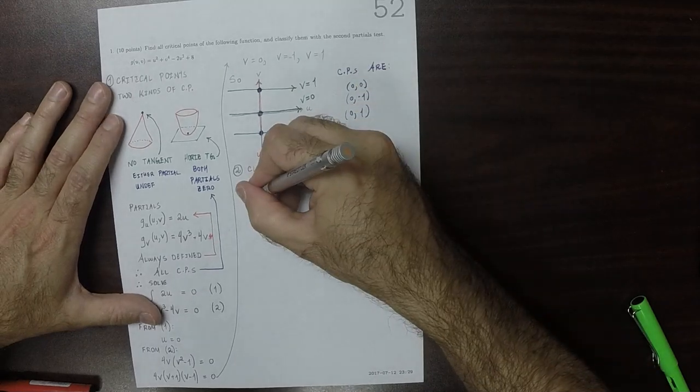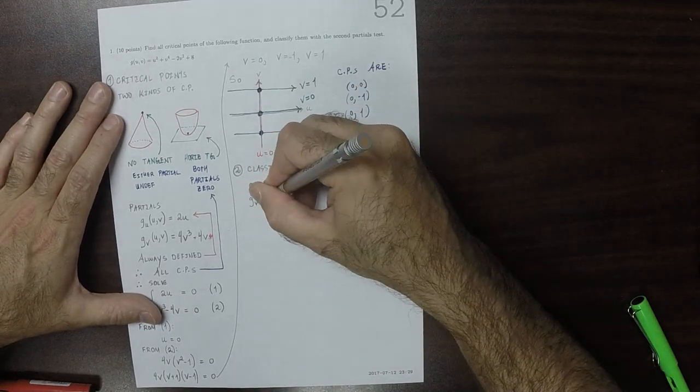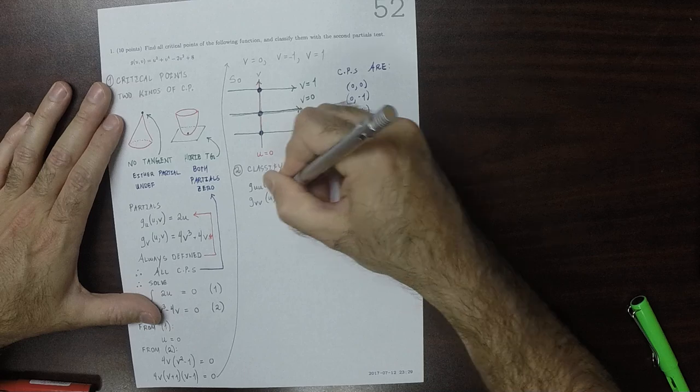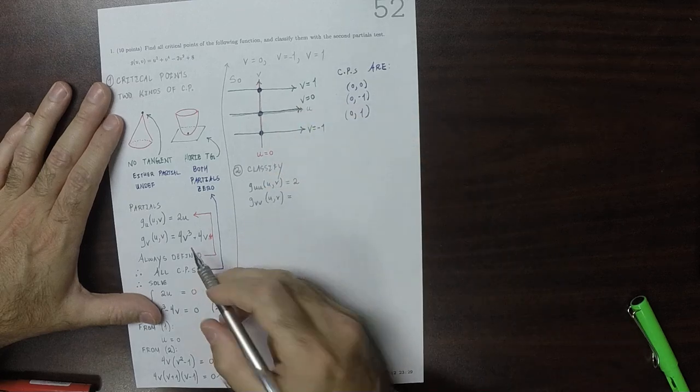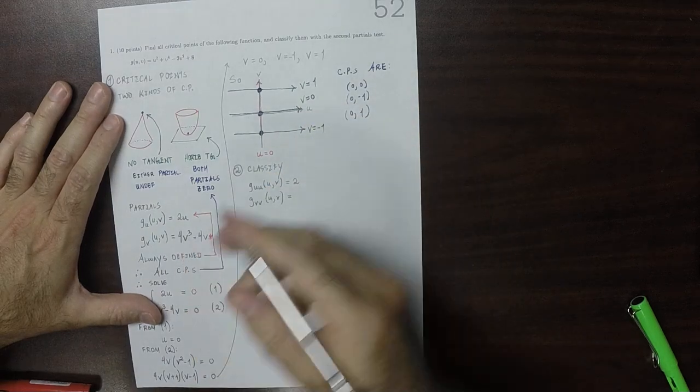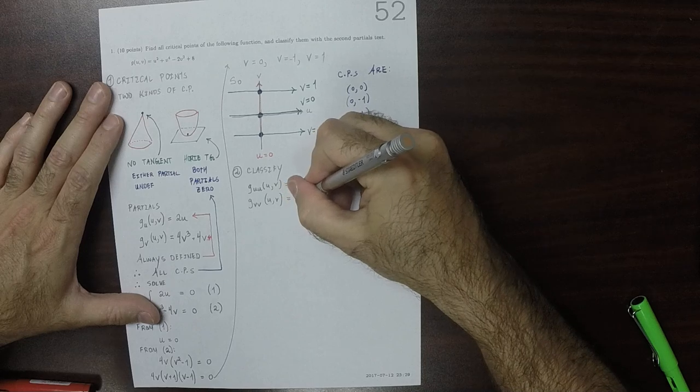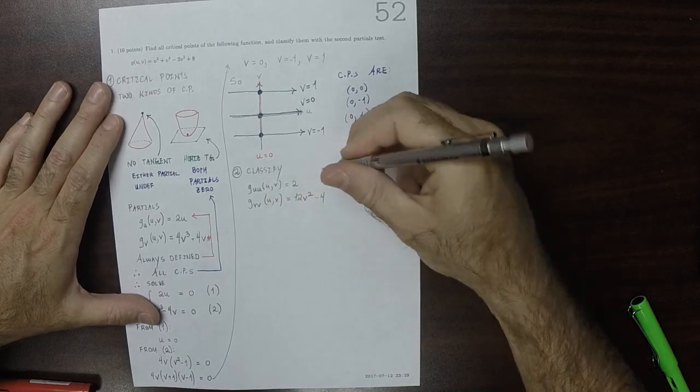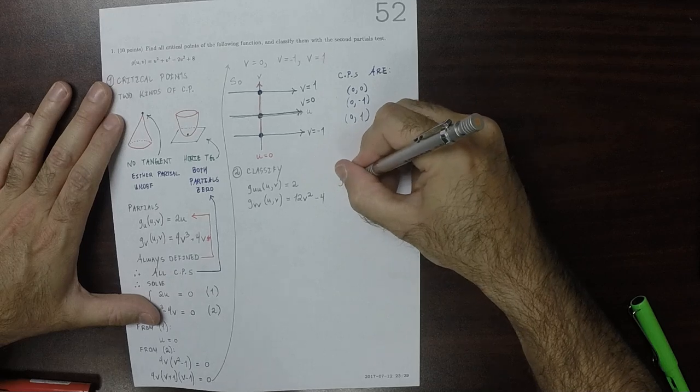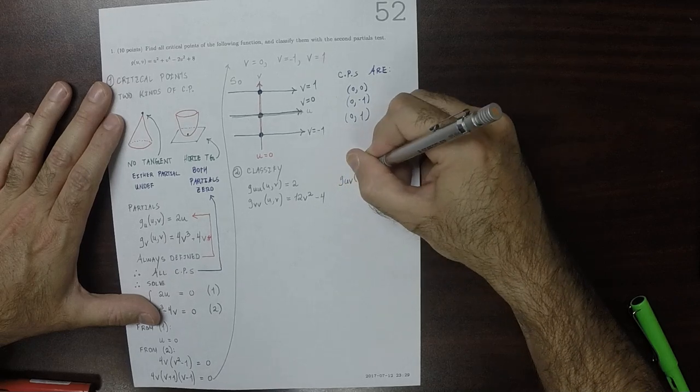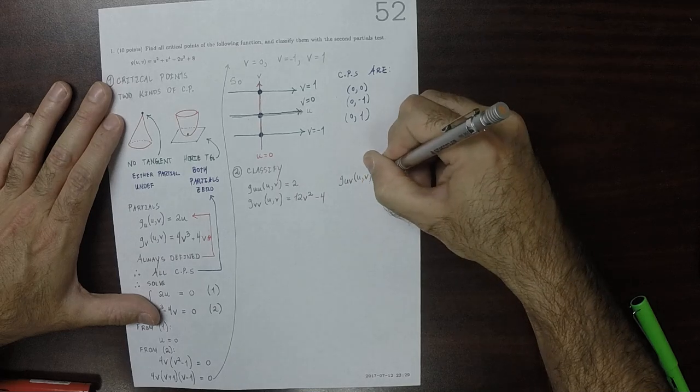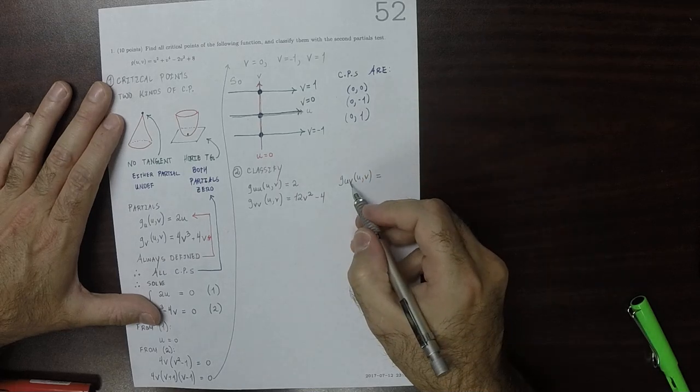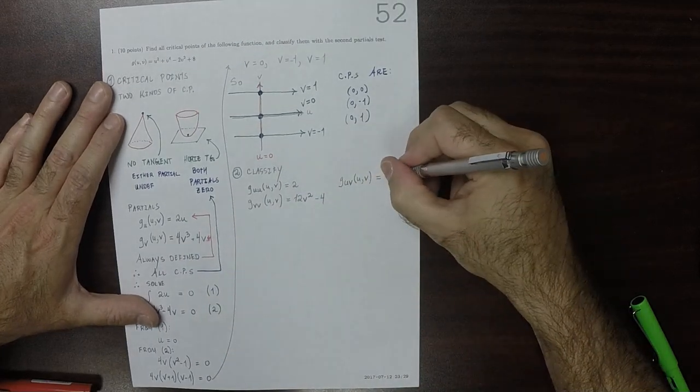The V, V partial is 12V squared minus four. The U, V partial, that means first U, then V, is zero.